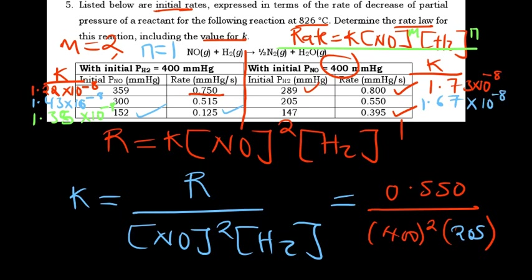For the last experiment, the rate was 0.395 and the hydrogen partial pressure was 147. K = 0.395 / (400² × 147), giving approximately 1.68 × 10⁻⁸.